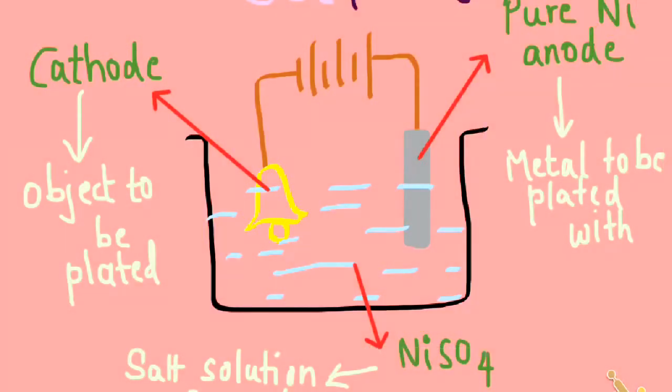When the current starts flowing, the electrolyte is separated into ions, i.e. nickel sulfate breaks down into ions of nickel and sulfate. The nickel ion being positively charged gets attracted to the cathode being negatively charged, and this results in the deposition of a nickel layer on the belt.